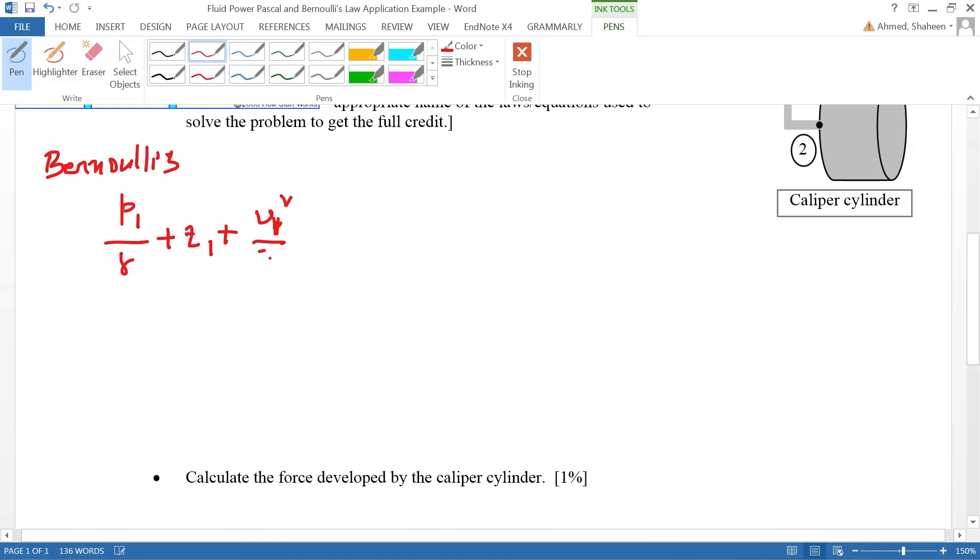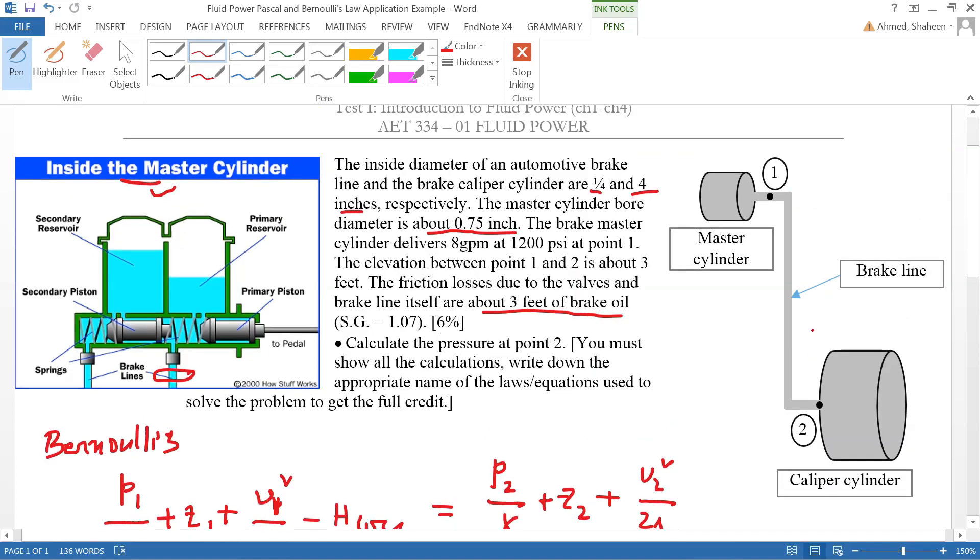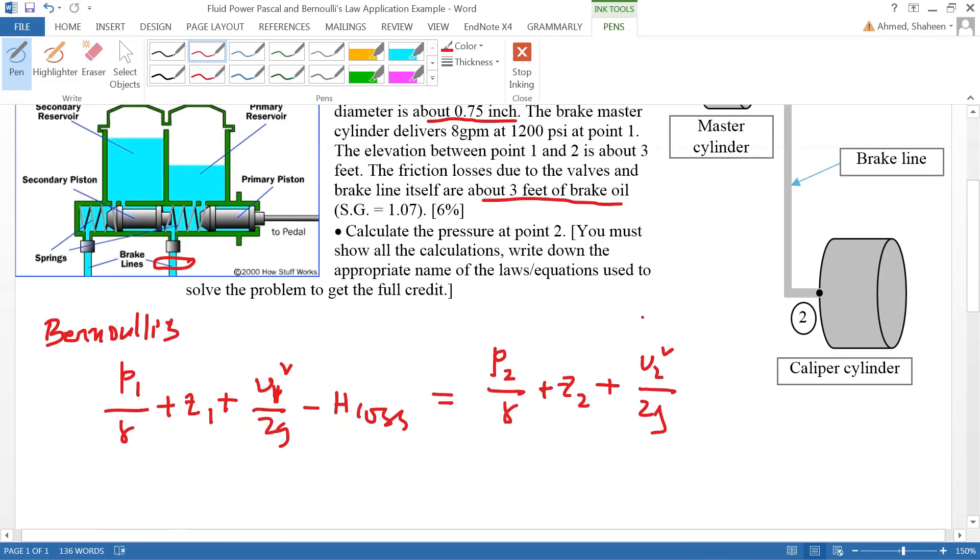Minus all the head losses equals the point two pressure head, the point two elevation head, and the point two velocity head. In this example, the velocities for point one and two are basically the same since they have the same diameter lines.